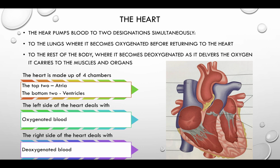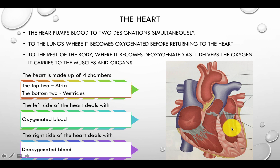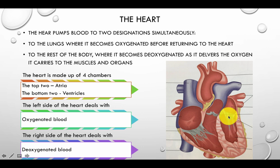The heart is made up of four chambers. The top two chambers, as you can see here, are the atria, and the bottom two are the ventricles. The left side of the heart deals with oxygenated blood and the right side deals with deoxygenated blood. Often in diagrams the heart is the wrong way around, so the right-hand side shown is actually the left-hand side of the heart, and the left-hand side shown is actually the right-hand side of the heart.